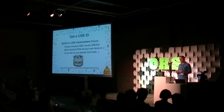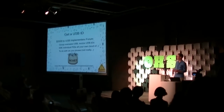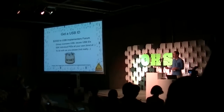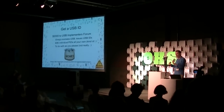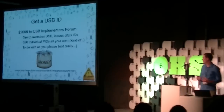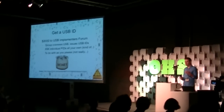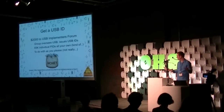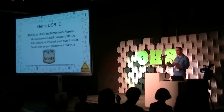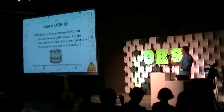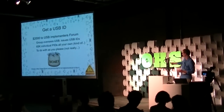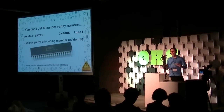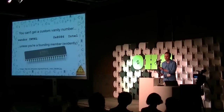USB IDs are handed out by an organization called the USB Implementers Forum — a consortium of big technology companies like Intel that formed USB standards and also make rules about how USB IDs are issued and rules for the use of the USB logo. For $2,000, you can get yourself a USB vendor ID with 65,000 unique product IDs for whatever you want to build. You can't use the USB logo, though — that's a whole other can of worms that costs more. And you can't get a custom vanity number unless you're a founding member.